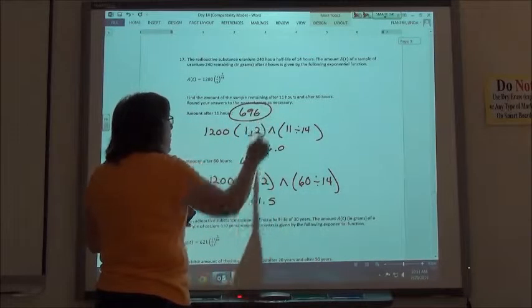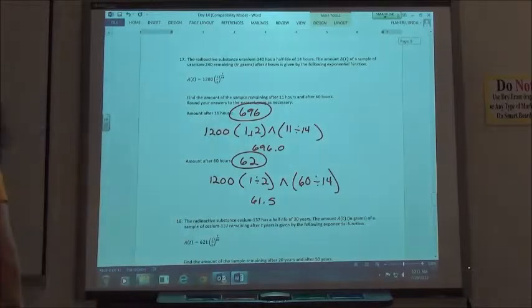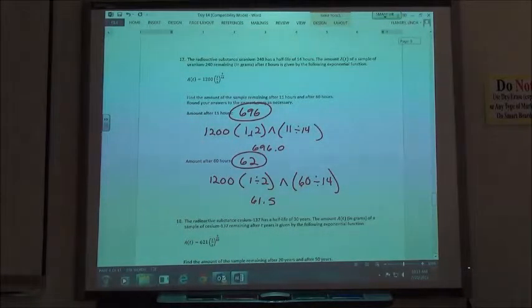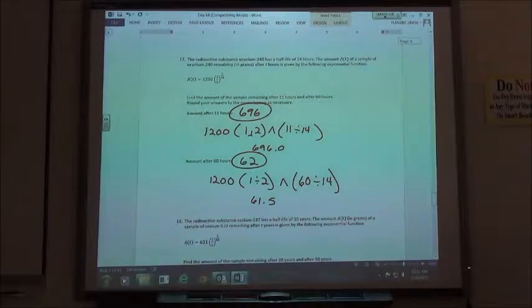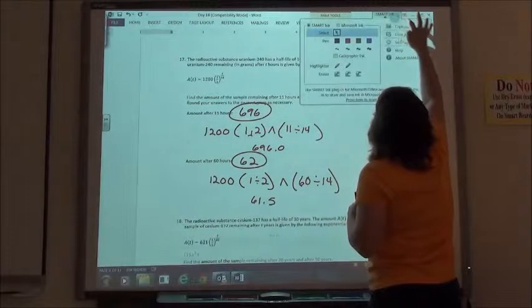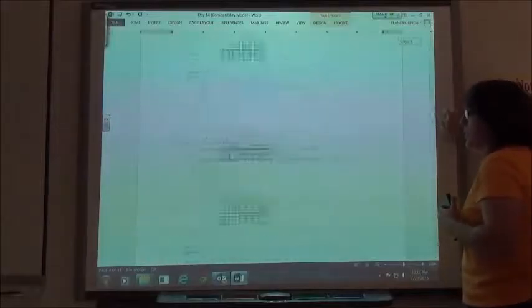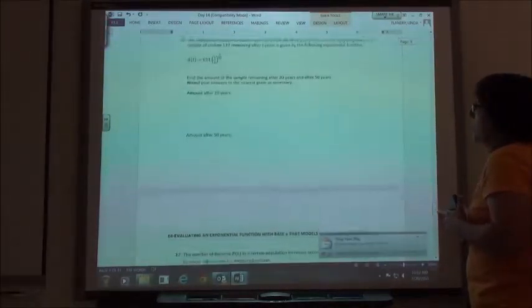So, 1,200, parentheses, do my half-life, 2, so 60 divided by 14, and I get 61.5, so I have to round that up to 62. So after 11 hours, I have 696. After 60 hours, I only have 62 left.